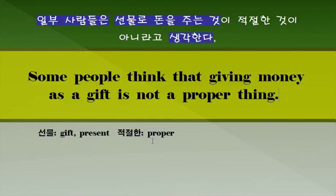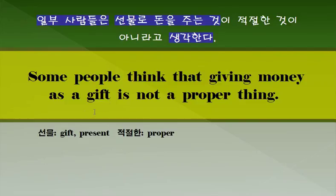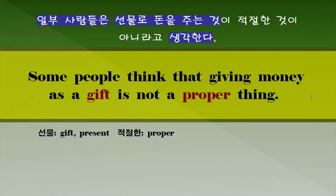다시 한번 확인하세요. 무언가가 뭐뭐하다고 생각하다, 이런 경우에 Think를 쓰고요, 대절 주어동사를 쓰면 됩니다. 선물은 Gift 혹은 Present. 그리고 적절한: Proper라고 하는 단어를 씁니다. 주요 표현 다시 한번 확인해 두시기 바랍니다.